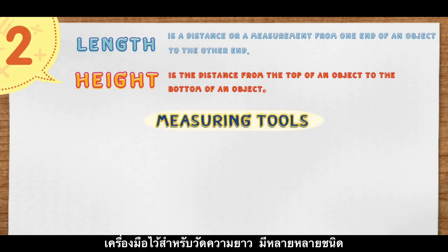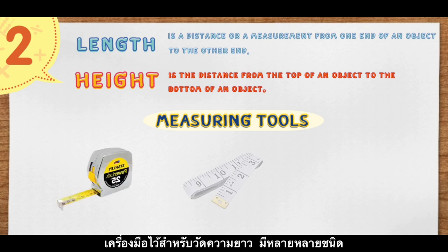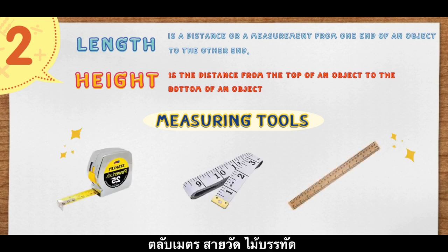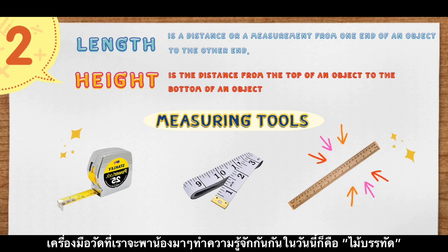Some of the standard measuring instruments for both length and height include measuring tapes and rulers. But today, we will just be learning more about rulers. Let's go!